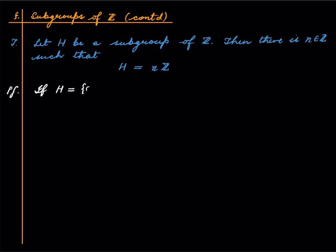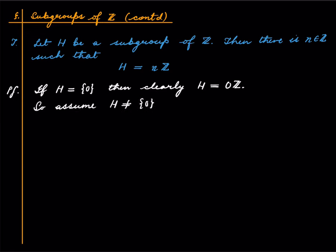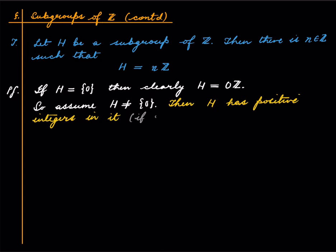Let's prove this. If H is the trivial subgroup, meaning H = {0}, then H = 0·ℤ and we are done. So assume H is not the trivial subgroup. Note that then H has positive integers in it — because if some element d is in H and d is non-zero, then -d is also in H since H is a subgroup. So if d is not positive, then -d will be positive, so in any case H contains a positive integer.